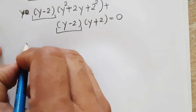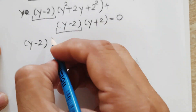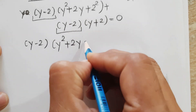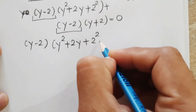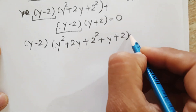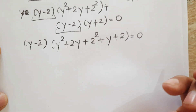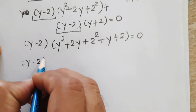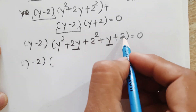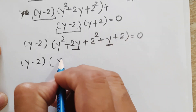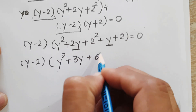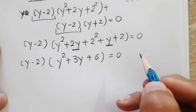Taking (y - 2) common: (y - 2)(y² + 2y + 2² + y + 2) = 0. Simplifying inside the bracket: 2y + y = 3y, and 2² + 2 = 6. So we get (y - 2)(y² + 3y + 6) = 0.